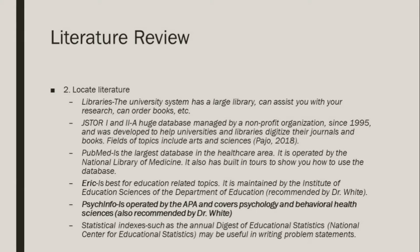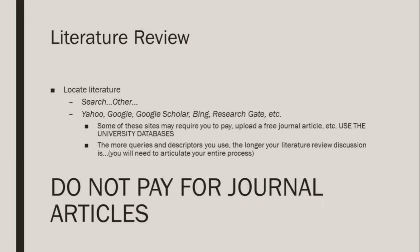Step 2: Locating literature. Remember, literature should be peer reviewed. You can locate literature in public databases as well as the university's databases. I have presentations on how to access and review journal articles — if you need to for this step, please review those presentations. There are databases out there that charge for accessing journal articles, but there are plenty of journal articles available through the university's databases. I cannot stress this enough: do not pay for journal articles.